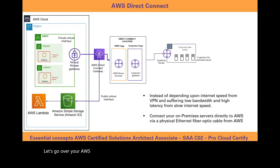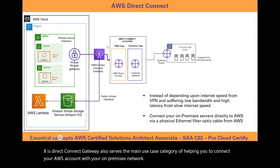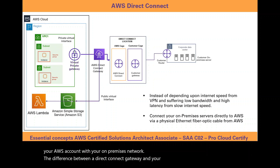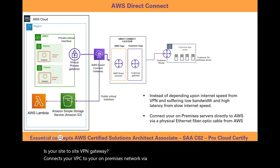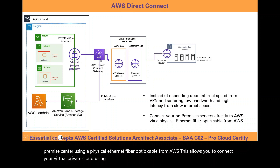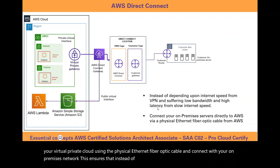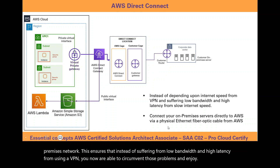Now let's go over AWS Direct Connect gateway. AWS Direct Connect gateway also serves the main use case of helping you connect your AWS account with your on-premises network. The difference is that your site-to-site VPN gateway connects your VPC to your on-premises network via the internet, while a Direct Connect gateway uses a physical Ethernet fiber optic cable from AWS. This allows you to enjoy higher bandwidth and lower latency instead of suffering from the bandwidth and latency issues of a VPN.